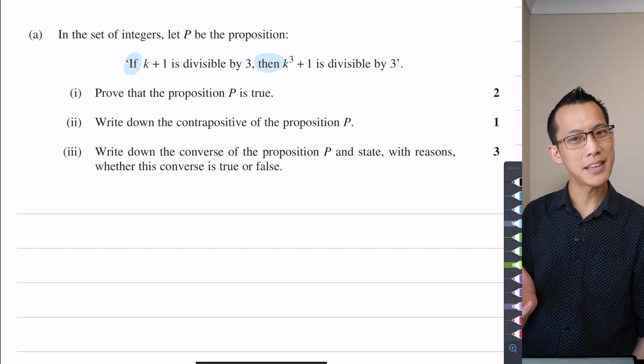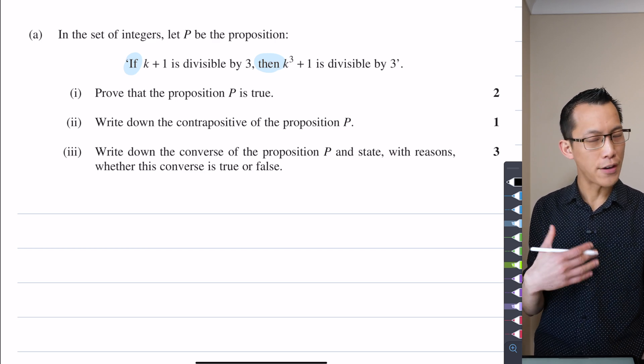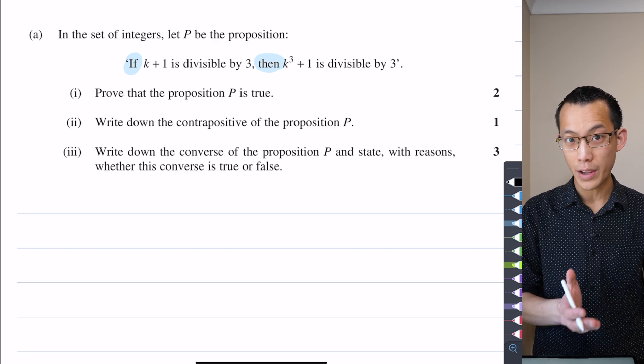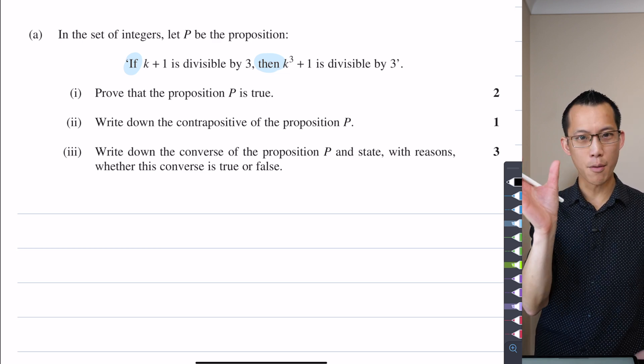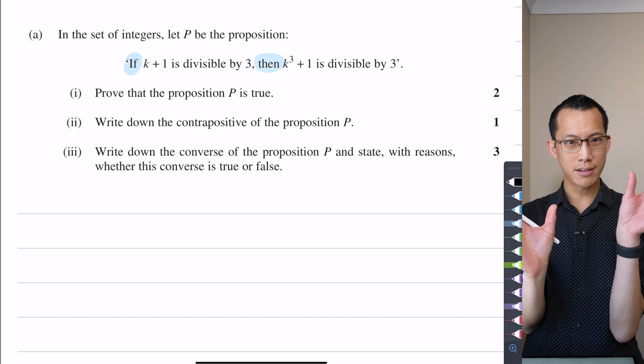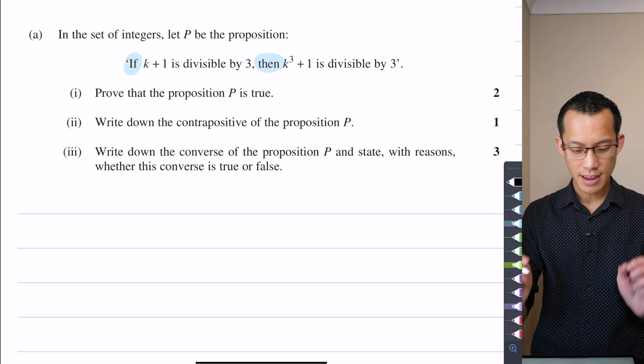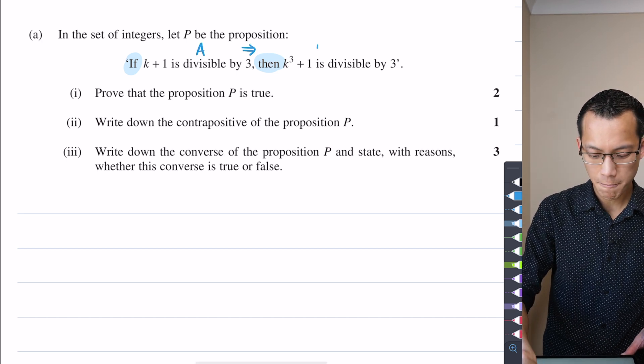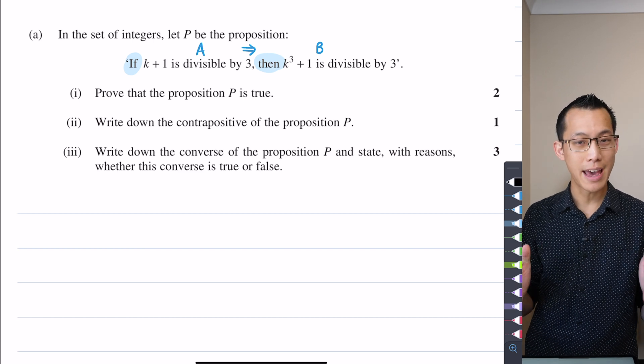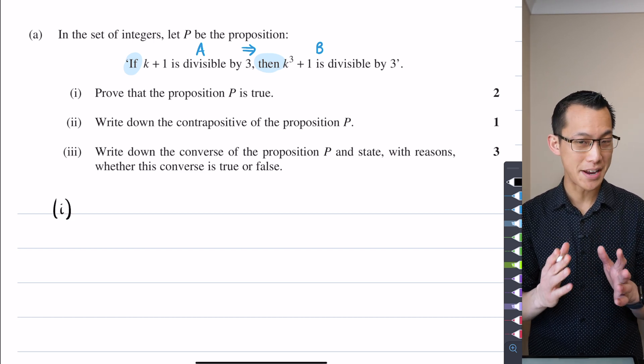So we want to prove that this is true. How do we go about doing this? It's fairly straightforward to start with the antecedent proposition and then see if we can reason from that using arithmetic and algebra to get to our consequent proposition. Can we start with A and then get to B? Can we start with A and then arrive at B through some fairly simple working? And I think we can.